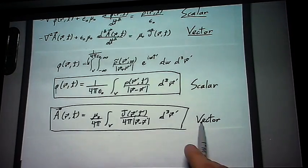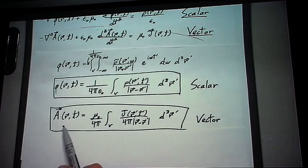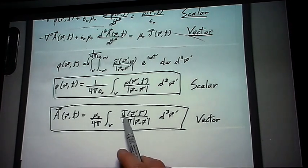And here, doing the exact same steps, we can get our vector potential equation in terms of the current density.